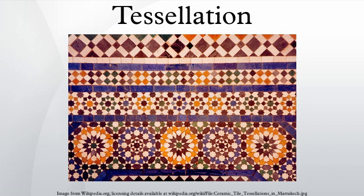In computer graphics, tessellation has a variety of usages. It is used to manage data sets of polygons presenting objects in a scene and divide them into suitable structures for rendering. Especially for real-time rendering, data are tessellated into triangles, for example in DirectX 11 and OpenGL.